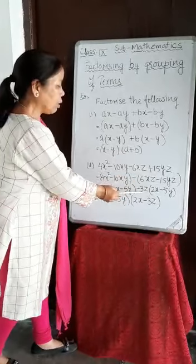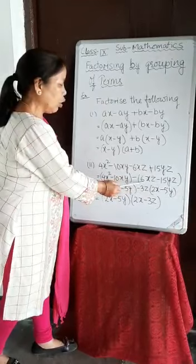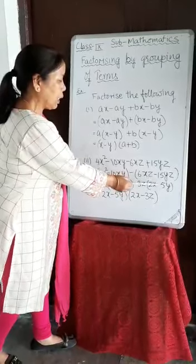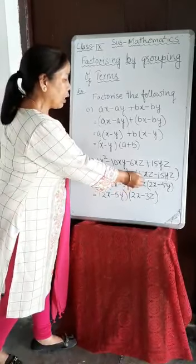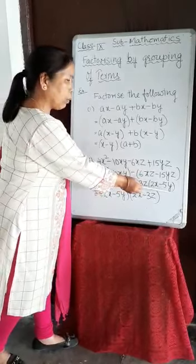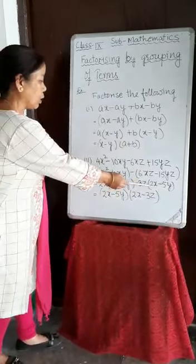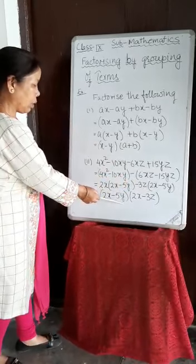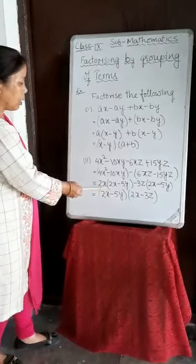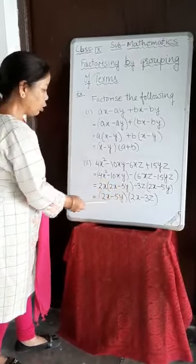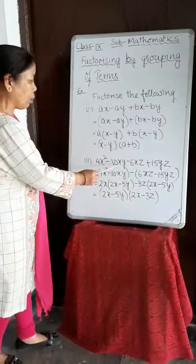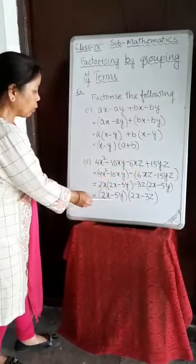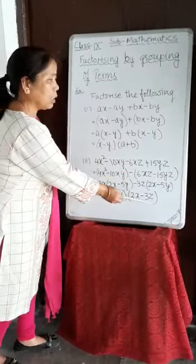In the second group, 3Z is common. Dividing 6XZ by 3Z gives 2X, and 15YZ divided by 3Z gives 5Y. So we have minus 3Z times (2X minus 5Y). Now 2X minus 5Y is common in both groups, so we take it out. What remains is 2X from the first group and minus 3Z from the second. Therefore the factors of 4X squared minus 10XY minus 6XZ plus 15YZ are (2X minus 5Y)(2X minus 3Z).